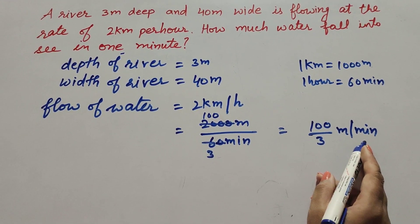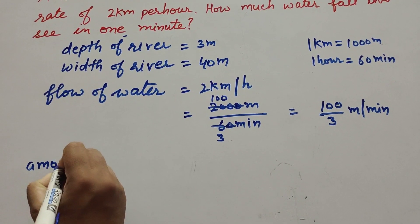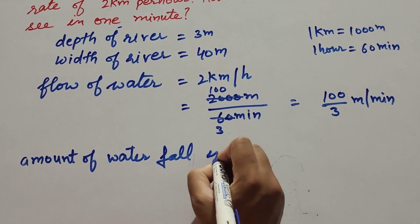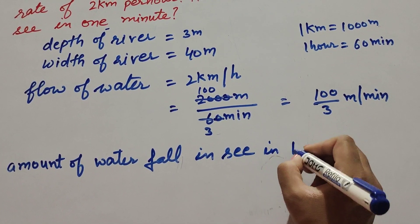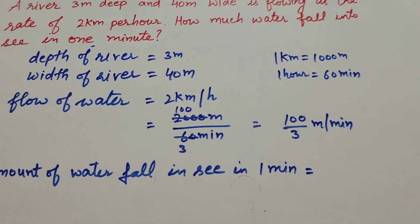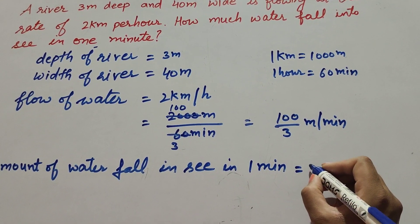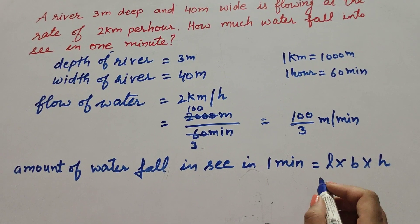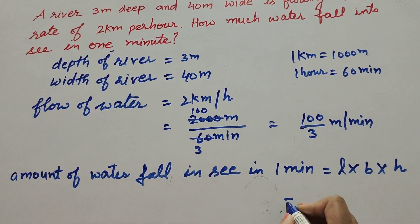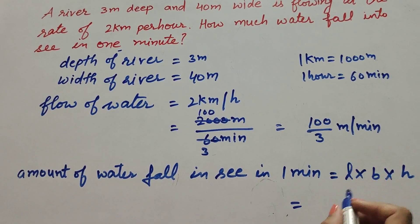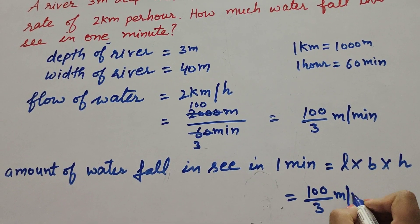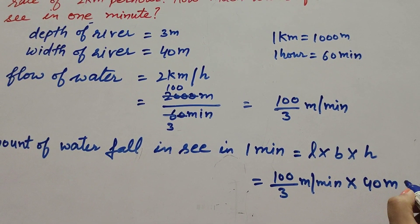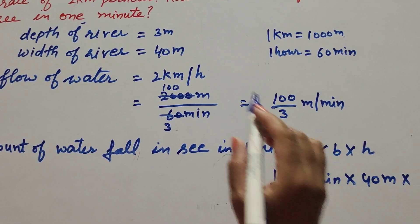Now we find the amount of water falling into the sea in one minute. We need to find its volume using the formula: Volume = length × breadth × height. Here, length means the flow of water = 100/3 meter per minute, breadth = 40 meter, and height = 3 meter.